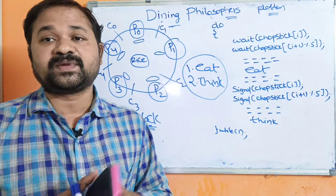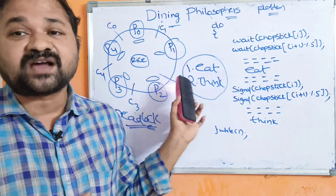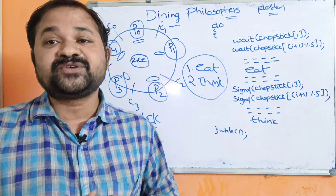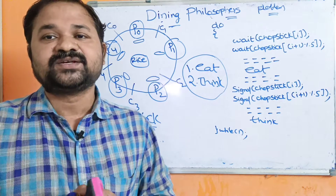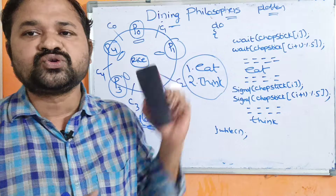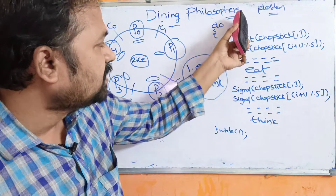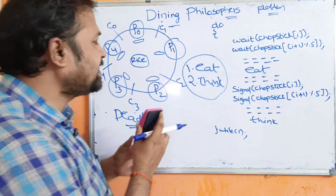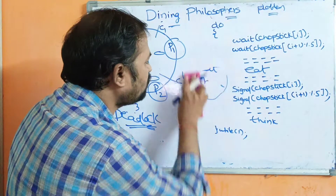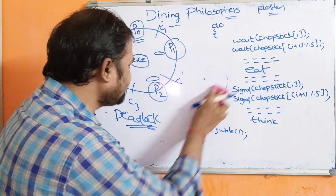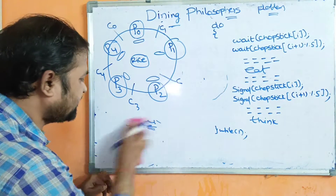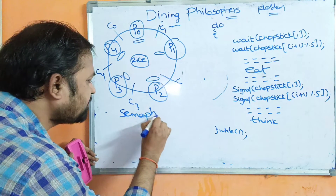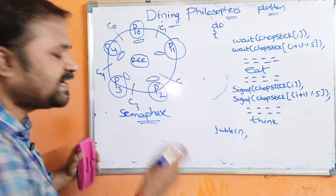How can we solve that problem? Our target is that no person has to die due to starvation — each philosopher has to get a chance for eating. In order to solve this problem, we are using an algorithm implemented with the help of a semaphore. Semaphore is nothing but an integer variable. Here we are using a binary semaphore, meaning the value may be either 1 or 0.